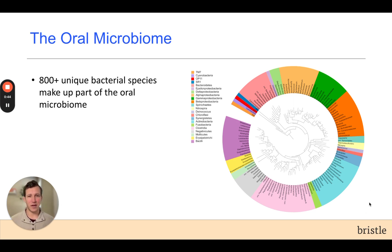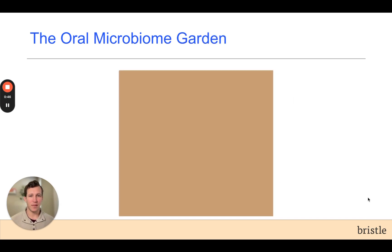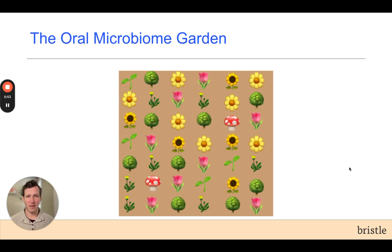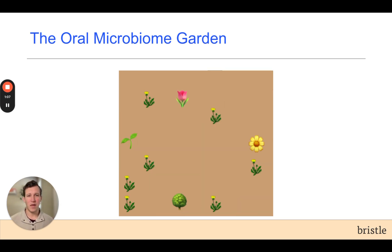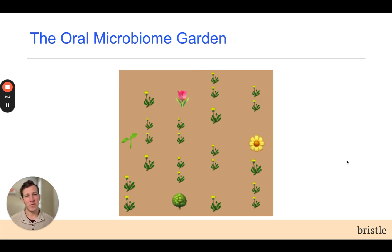To better understand how these bacteria contribute to our health, let's imagine it as a garden. To have a healthy and happy garden, we need a good variety of different plants, vegetables, and other crops that live harmoniously together and provide us nutrition. But when we don't tend to our garden, or it becomes influenced by environmental or outside factors, our good crops can die, and this leaves weeds and other invasive plants to take over the garden, further harming the soil and any remaining good crops.